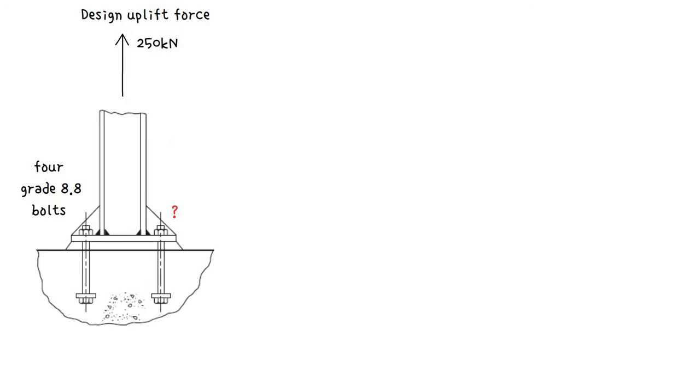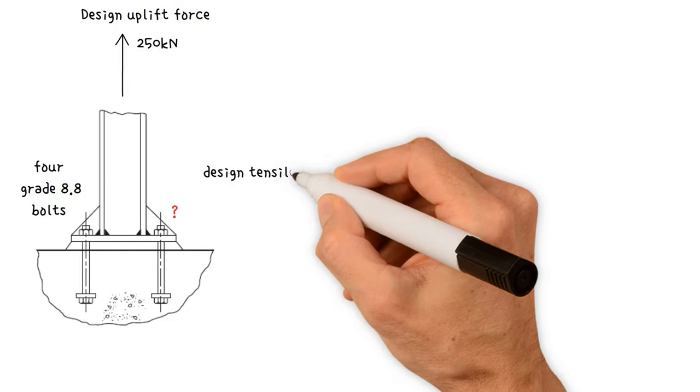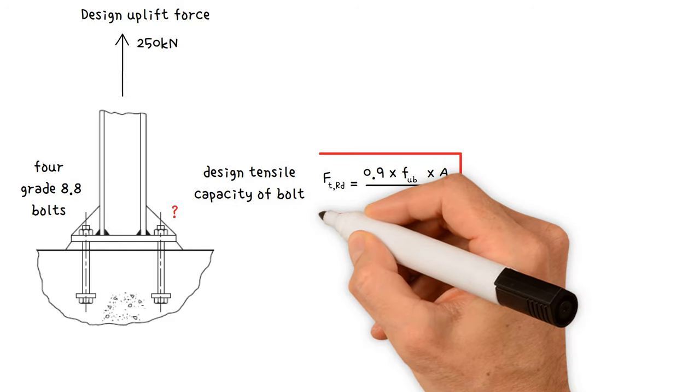How should we figure out what the minimum bolt diameter should be? The design tensile capacity of a bolt is given by this equation.